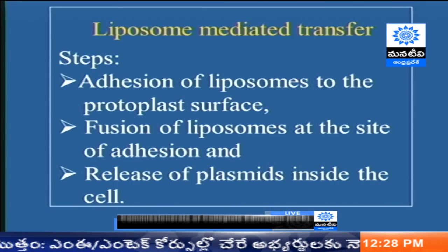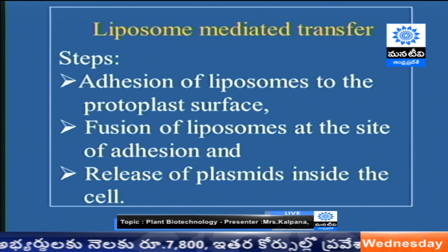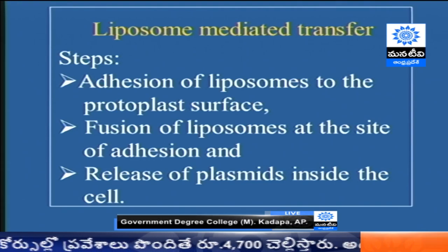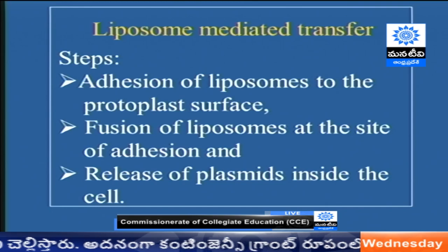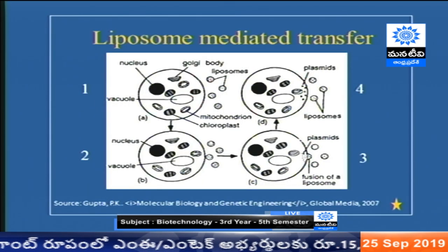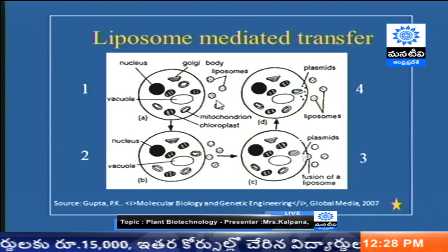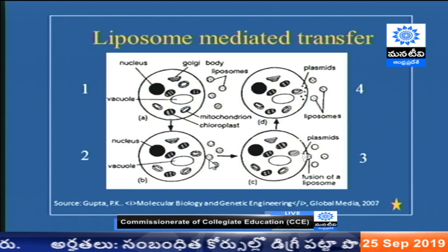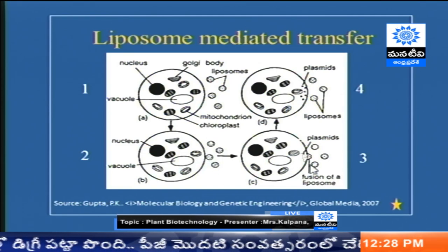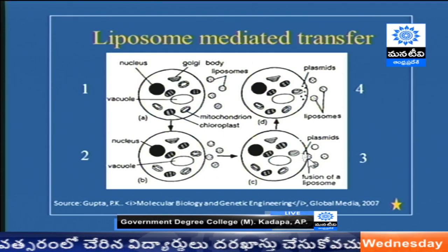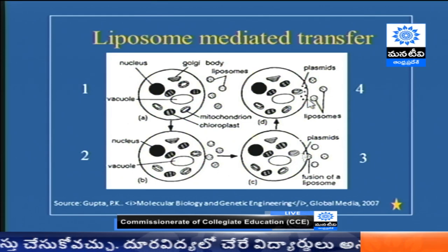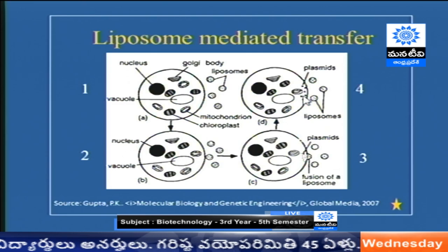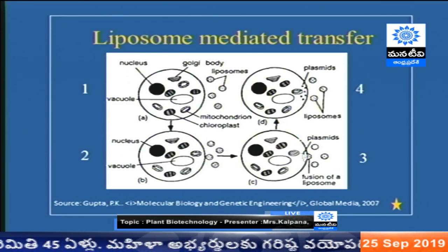The steps involved in liposome-mediated gene transfer are: first, the addition of liposomes to the protoplast surface; then fusion occurs between the liposomes and the protoplast at the site of addition; finally, the release of plasmids inside the cell. This is the schematic diagram where we can see the liposomes containing the gene of interest attaching to the protoplast membrane, and finally fusion occurs so that all the contents in the liposomes — the plasmid constructs intended for transfer — enter into the protoplast.